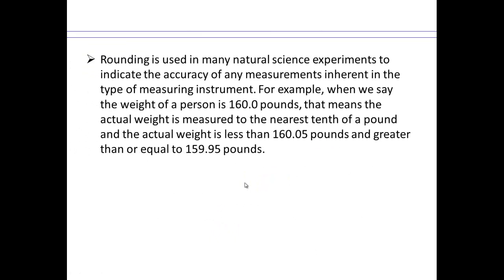Rounding is used in many natural science experiments to indicate the accuracy of measurement, and it depends on what equipment you are using to measure. For example, when we say weight of a person is 160.0, it's not 160 pounds. What that means is that the actual weight is measured to the nearest tenth of a pound. So the actual weight is less than 160.05 pounds and greater than or equal to 159.95 pounds. This is important to remember. If you read a nutrition label and it says 0 grams of fat or 0.0 grams of fat, think about what that really means.